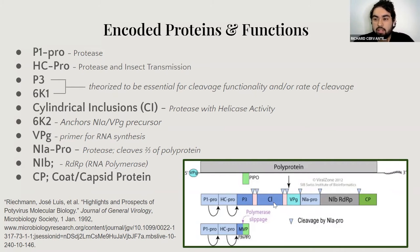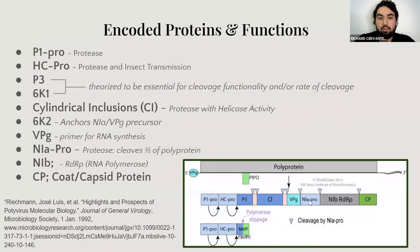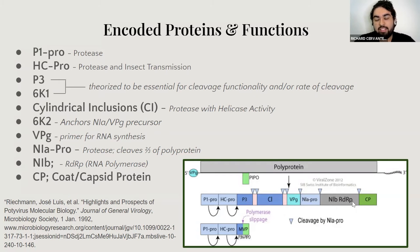The CI protein enacts helicase activity and is a protease itself, which helps with RNA replication. We have 6K2, which anchors NIa and VPG precursors. VPG is also encoded, acting as a primer for RNA synthesis and helping RNA replication inside the cell. NIa protease cleaves a large portion of this polyprotein and allows the proteins to start activating and working together. NIb is actually the RNA polymerase, which is very essential for RNA replication. And finally, we have CP, the coat protein, which allows attachment between the virus and the receptors, enabling vector connection and transmission.